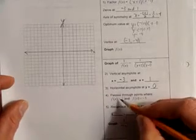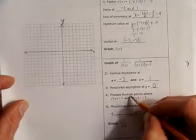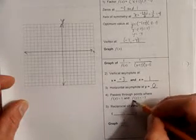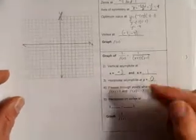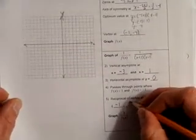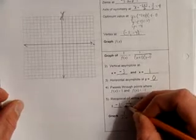We also know when we go to graph, the equation will pass through the original function at 1 and negative 1 for y. Finally, we take the reciprocal of the vertex. The x stays the same, negative 1, but the y is 1 over negative 4. That's going to be our reciprocal vertex.